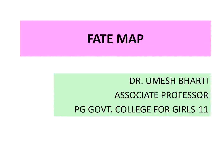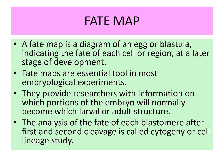Good morning students. Today our topic is fate maps. A fate map is a diagram of an egg or blastula indicating the fate of each cell or region at a later stage of development. Fate maps are important essential tools in most embryological experiments. They provide researchers with information on which portion of the embryo will normally become which larval or adult structure. The analysis of the fate of each blastomere after first and second cleavage is called cytogeny or cell lineage study.